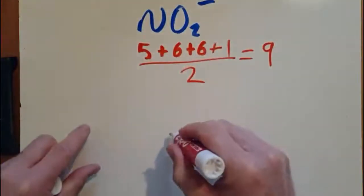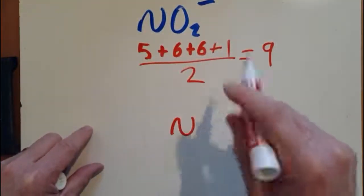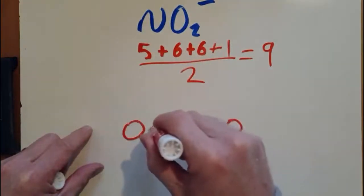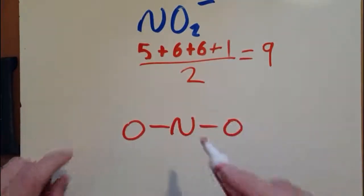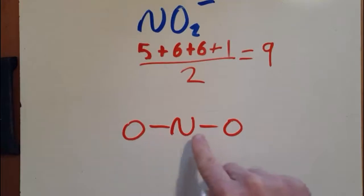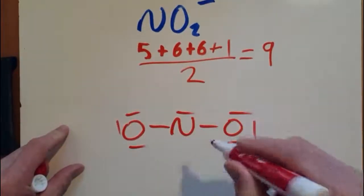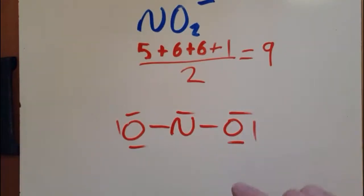So nitrogen is the first atom in the formula, so almost certainly that goes in the middle. And spread the others around evenly and just join them up. We've dealt with two electron pairs and we have 9 in total, so there's 7 more to go. 1, 2, 3, 4, 5, 6, 7 is tempting, but that can't be true.